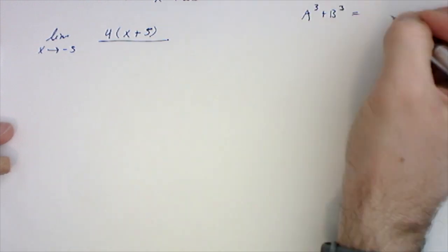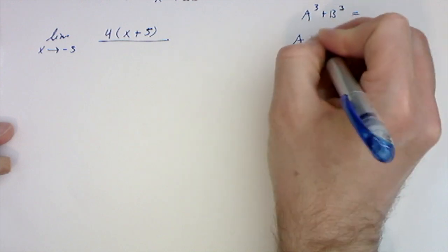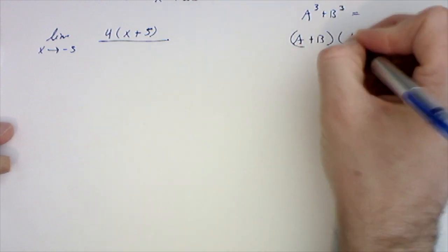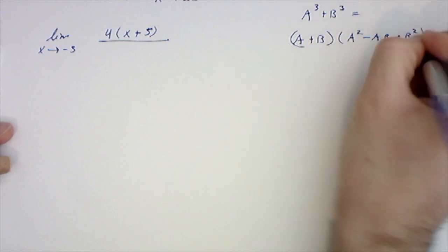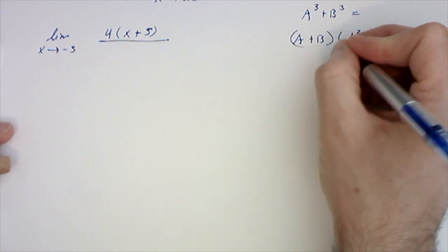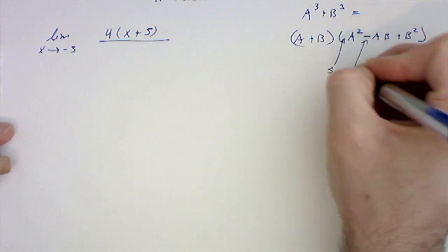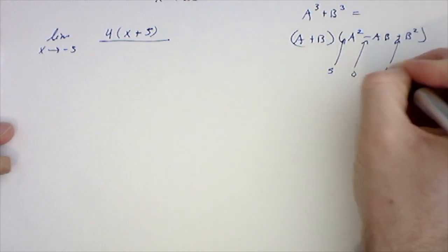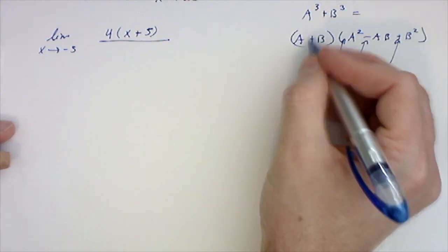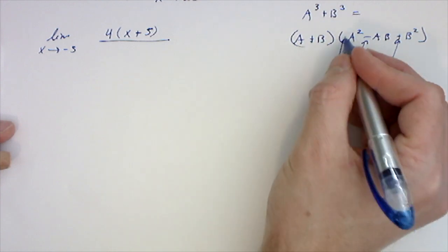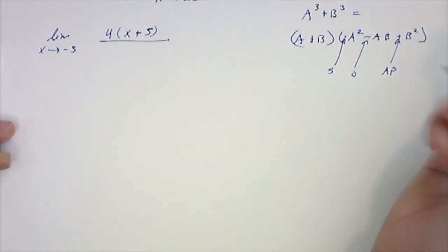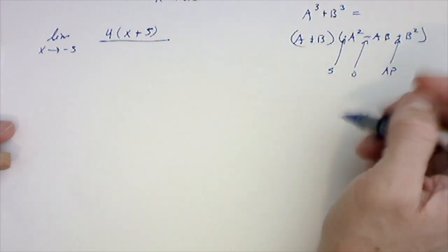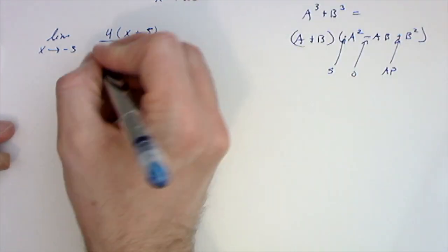The denominator x cubed plus 125—well, x cubed plus 5 cubed is of the form a cubed plus b cubed. The sum of cubes factors as a plus b times a squared minus ab plus b squared. There's this thing called SOAP: same, opposite, always positive. This sign is the same sign plus, this sign is the opposite sign, this sign is always positive. It also works with a cubed minus b cubed, except the opposite changes.